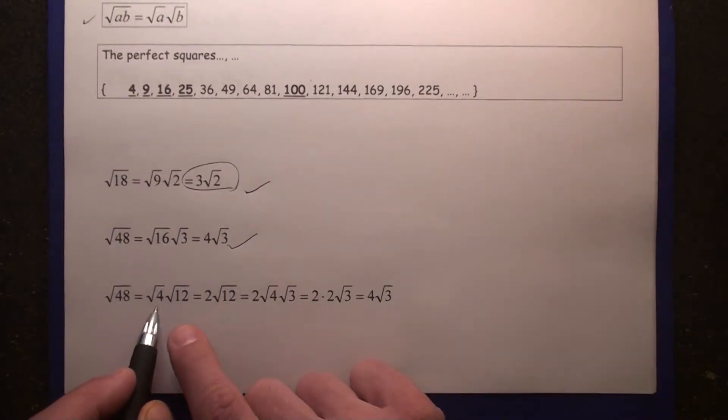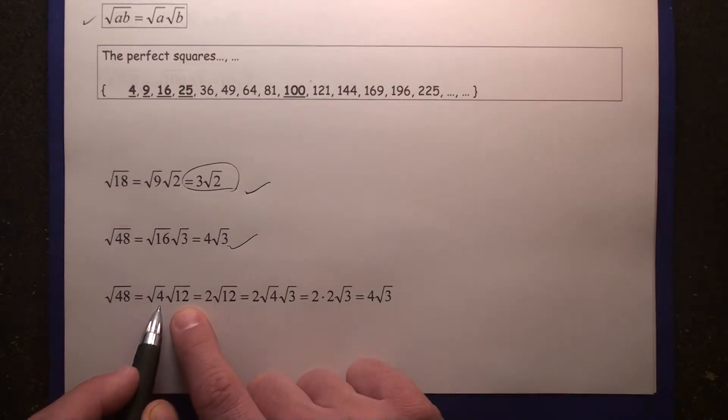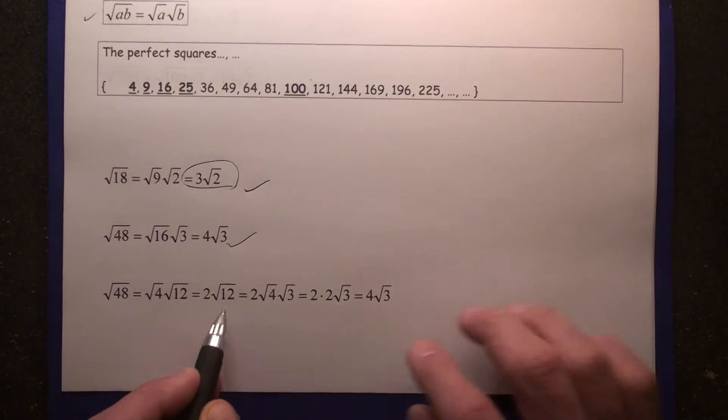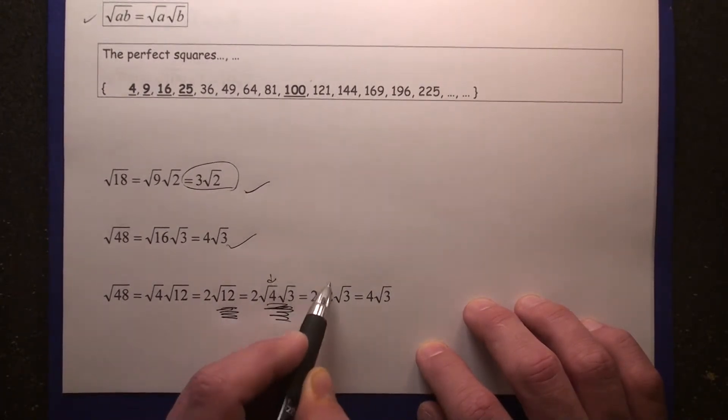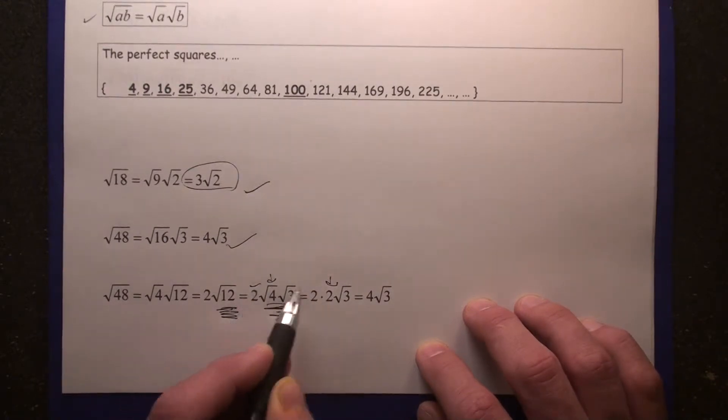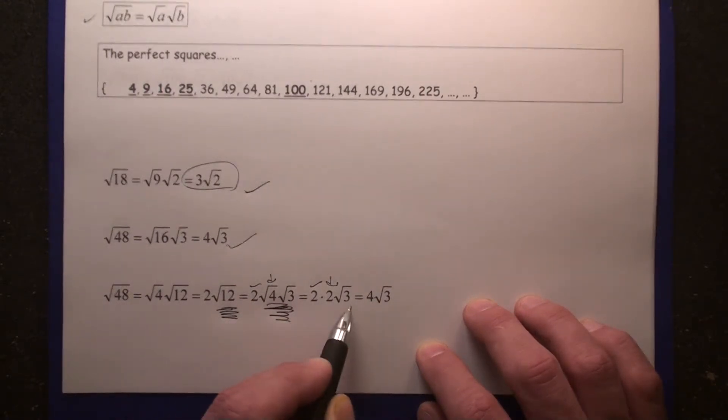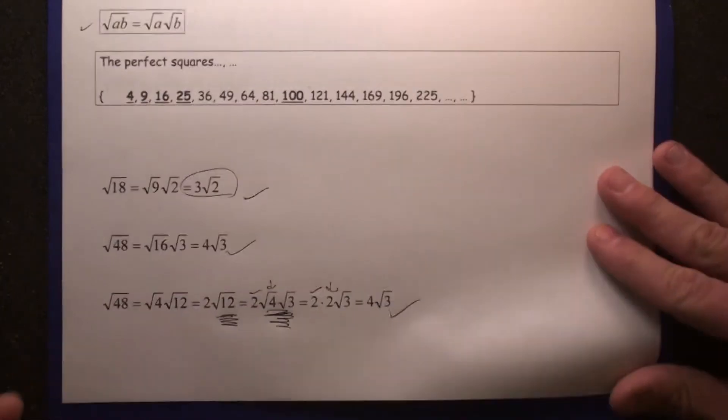Now, you could have also done this using 4 and 12 instead. It's just going to take you longer. Root 4, root 12 is going to give you 2 root 12. Hopefully, you recognize that 12 divides by 4. And then you're going to change this root 4 to that 2. Bring this 2 over here. You're going to have 4 times root 3. You're still going to get 4 root 3 as your answer.